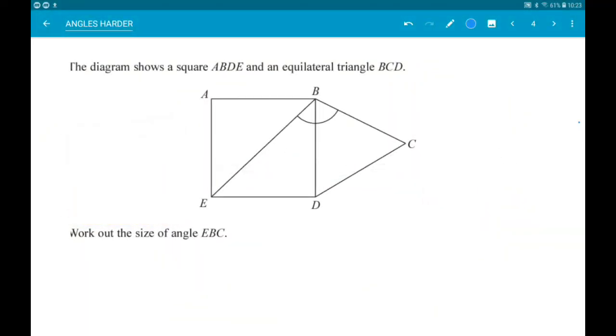Okay then, first up we have a square ABDE and an equilateral triangle BCD. We want to work out the size of angle EBC.